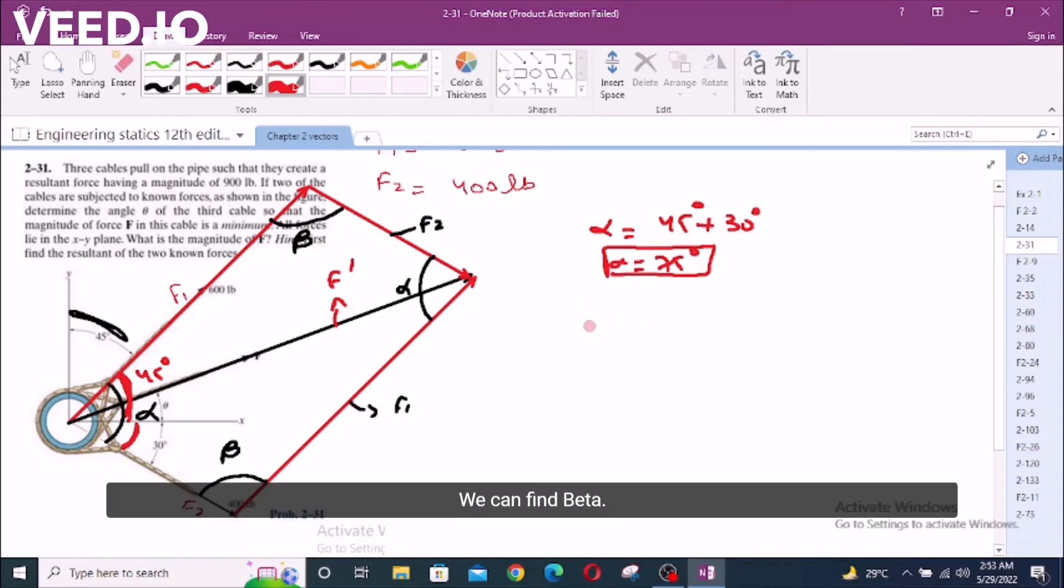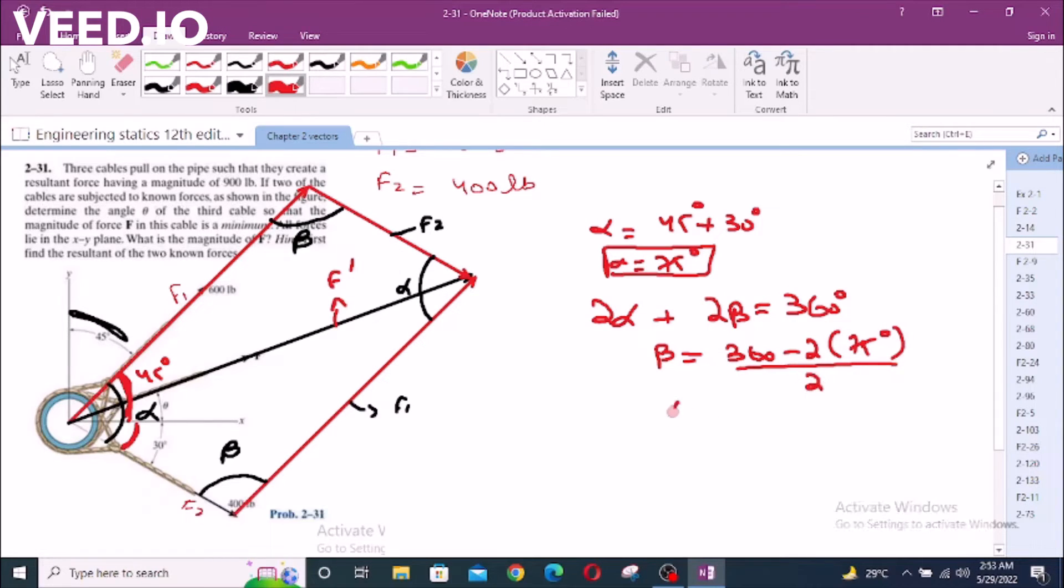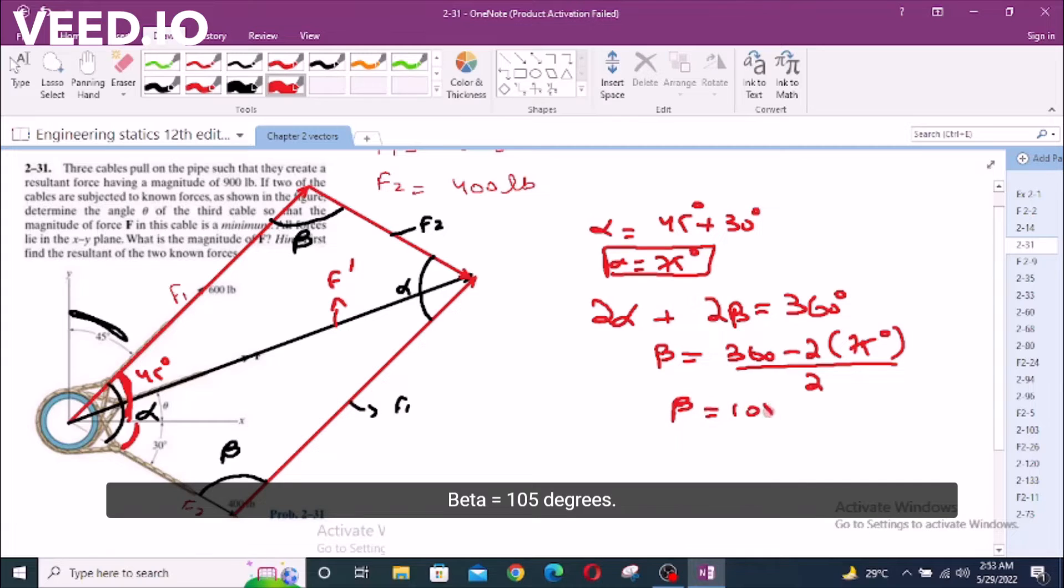We can find beta, we know that the sum of interior angles of a quadrilateral is 360 degrees. Now beta equals 360 minus 2 times alpha, divided by 2, beta equals 105 degrees.